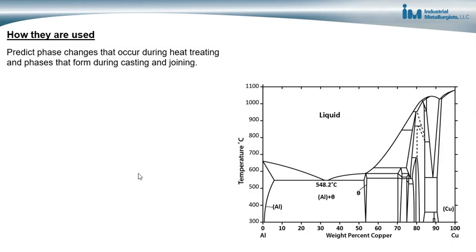The phase diagram, in addition to showing the temperature and the composition, also shows the different phase fields. The phase fields indicate the phase or phases that are present at a particular alloy composition for a particular temperature.